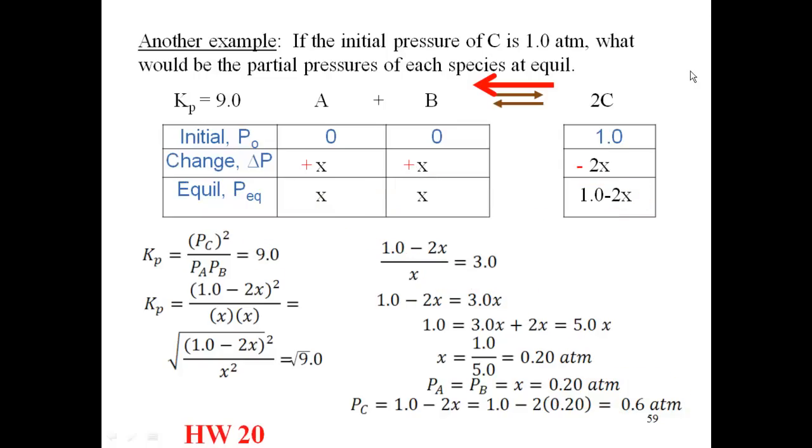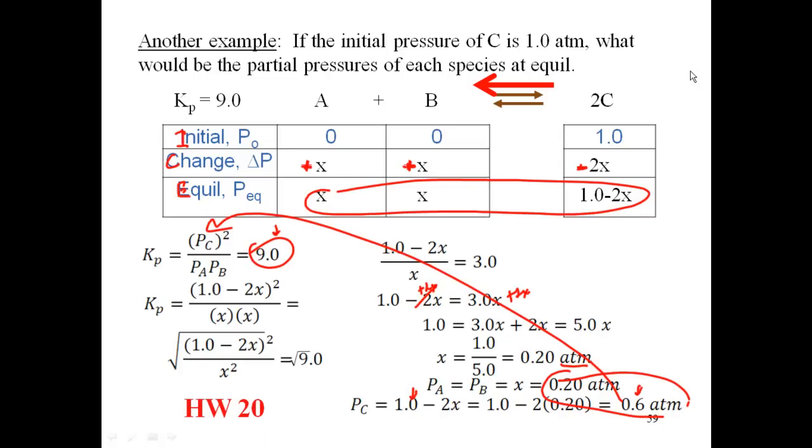Homework 20, this deals with everything going from reactants and products, products going to reactants, going to the left. Once again, make sure you understand why these are pluses on one side, minuses on the other side.